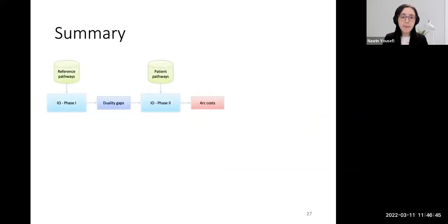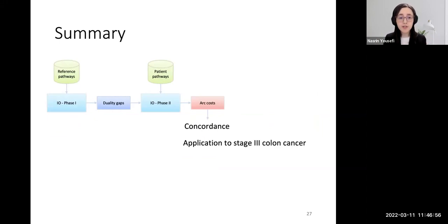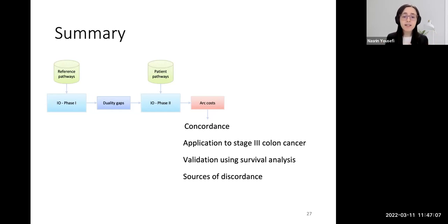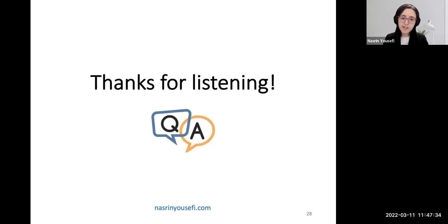To summarize, we developed a two-phase inverse optimization approach for measuring clinical pathway concordance and applied it to real patient data for patients with stage three colon cancer. We validated the metric using survival analysis and found the sources of discordance in the patient population. We could then give action items to policymakers, and we are still in contact with Cancer Care Ontario, hoping these concordance metrics and suggestions will be implemented. Thank you so much for listening.